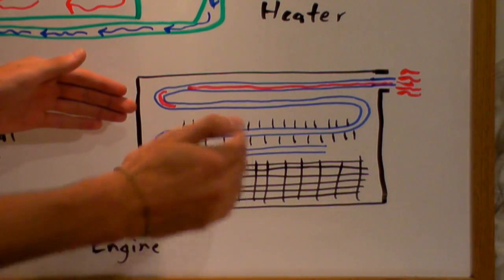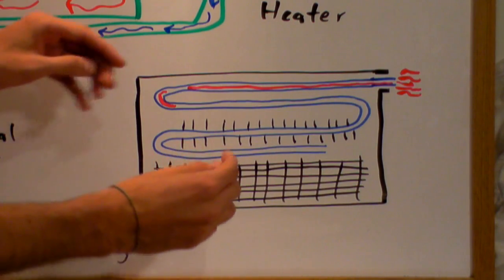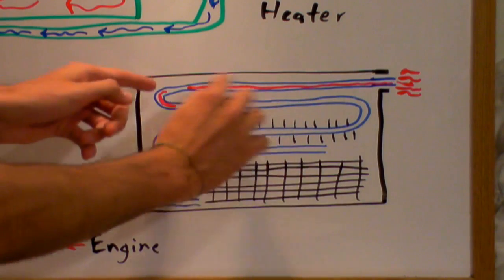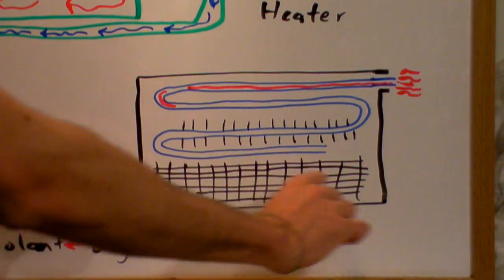Now how it does that is air is going to be feeding through this and there's going to be aluminum fins attached all to these tubes here, so it's just going to look like an aluminum mesh.